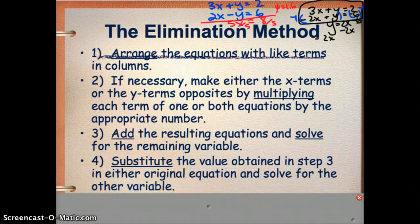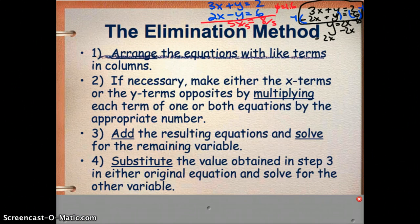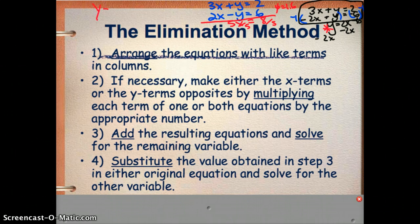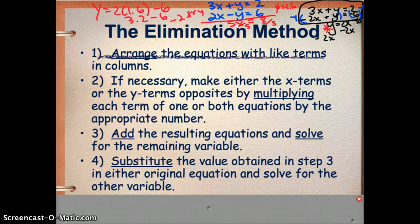And then lastly, you have to substitute the value obtained in step 3 in either original equation and solve for the other variable. So I might go back to this equation, y equals 2x minus 6. So y equals 2 times 1.6 minus 6. So 3.2 minus 6. Negative 2.8 is what I think y would equal.